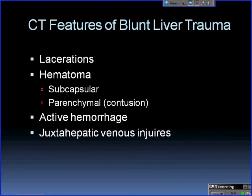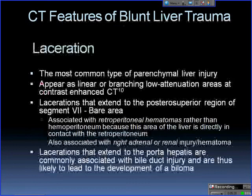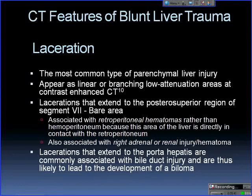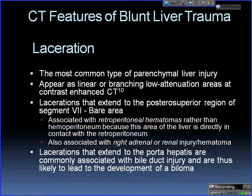The major CT features of blunt liver trauma include lacerations, subcapsular hematoma, intraparenchymal hematoma (also referred to as contusion), active hemorrhage, and major juxtahepatic venous injuries. Lacerations are the most common type of parenchymal injury. They appear as linear or branching low-attenuation areas on contrast-enhanced CT. Lacerations extending to the posterior superior region of segment 7 or the bare area are associated with retroperitoneal hematomas, and are also associated with right adrenal gland or renal injuries.